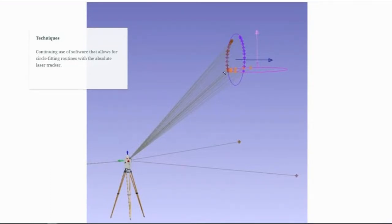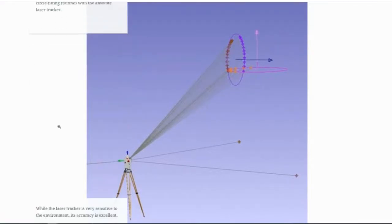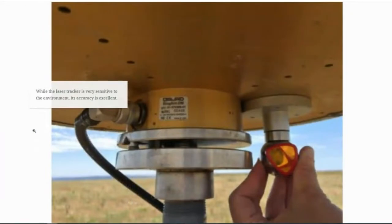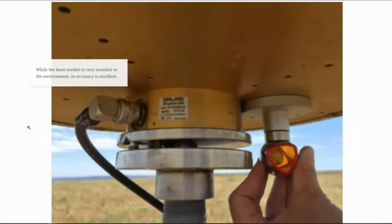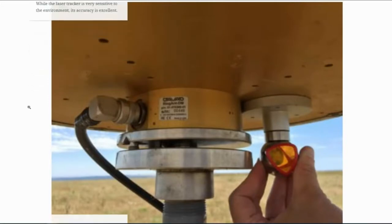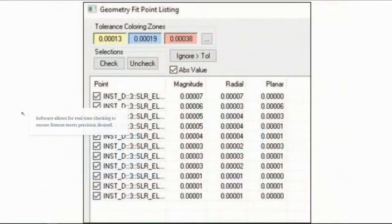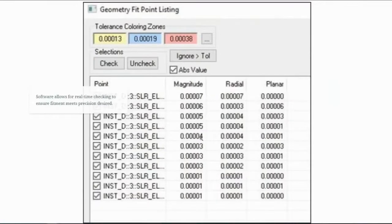Some of you have seen these circle fitting routines that we're using for VLBIs and SLRs with the Leica absolute laser tracker, which is very precise equipment. It also makes it very sensitive to the environment around it, but the prisms and the telemetry itself is quite accurate. The accuracy we're looking at, submillimeter here, this is a circle fitting routine.